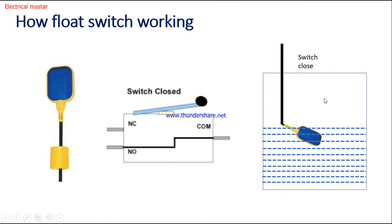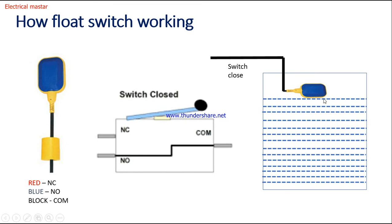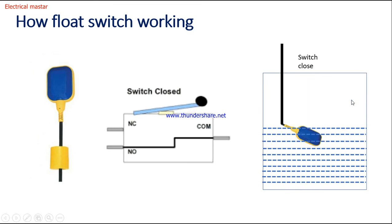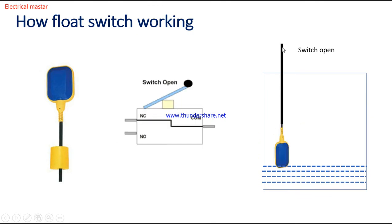Similarly, when the water level gets reduced — you can see here, this is a full water level and gradually the water level is getting reduced — the float will move downward. When it reaches the completely vertical position, this is the vertical position of the float switch.